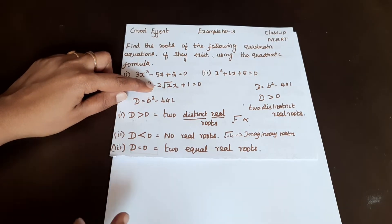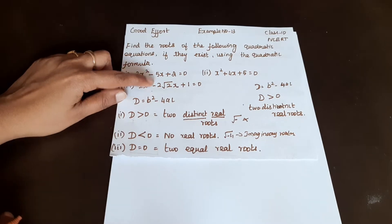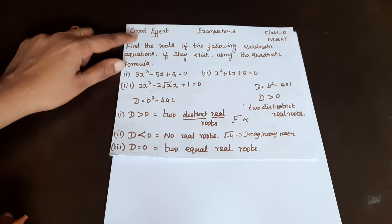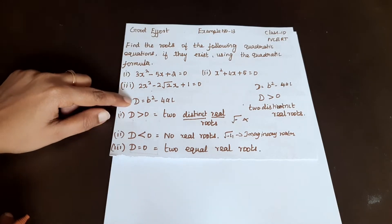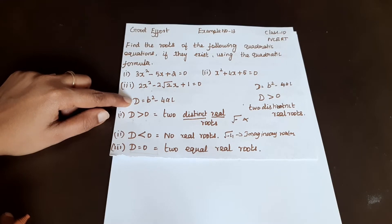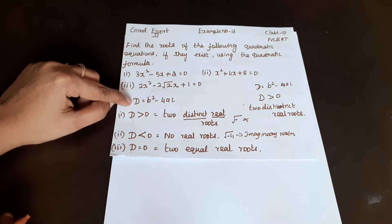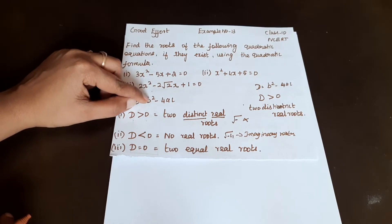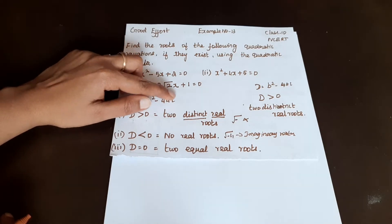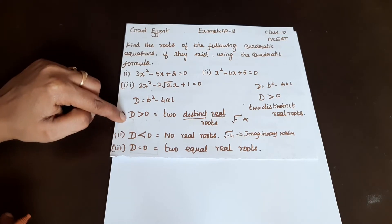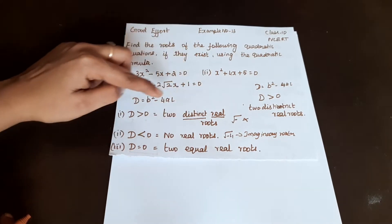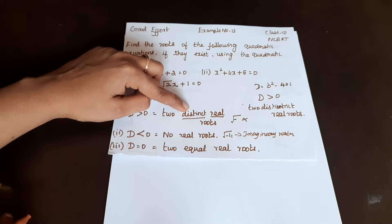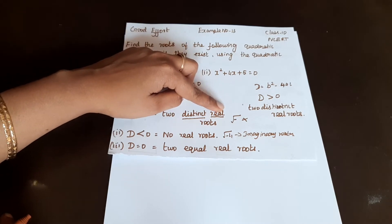We need to check whether roots exist or not. Using the quadratic formula, x is equal to minus b plus or minus under the root of b squared minus 4ac, divided by 2a. If the discriminant D is greater than 0, we get two distinct real roots.